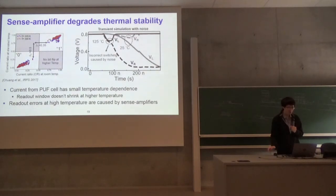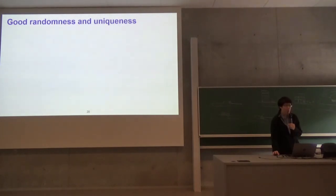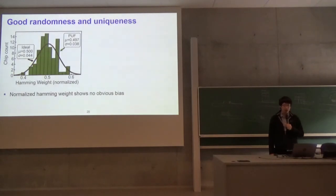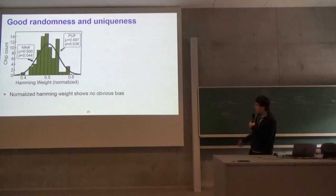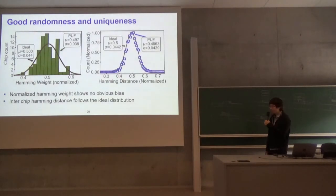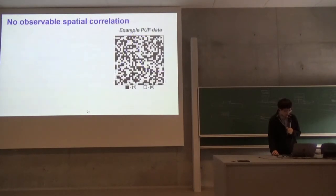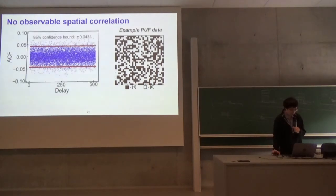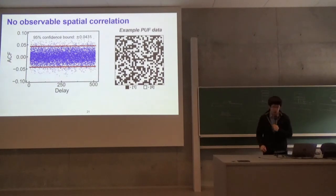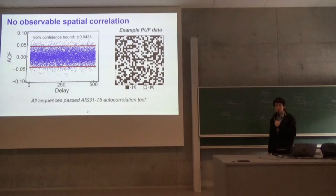Finally, we show the randomness and uniqueness. The normalized Hamming weight follows the ideal binomial distribution, showing no bias. The inter-chip Hamming distance also follows the ideal binomial distribution and has a mean value really close to 0.5, so we have good randomness and uniqueness. We observe no special correlation. The autocorrelation function is close to ideal values, and all data sequences pass the AIS31 autocorrelation test, meaning there's no special correlation.